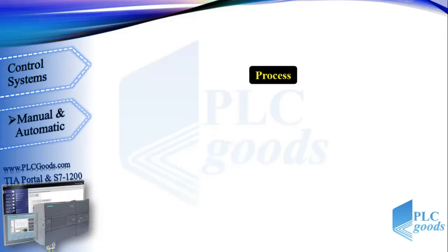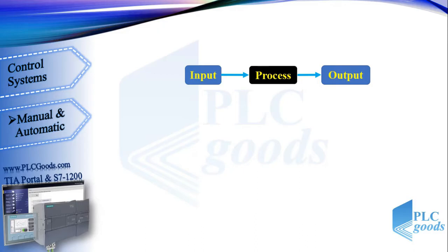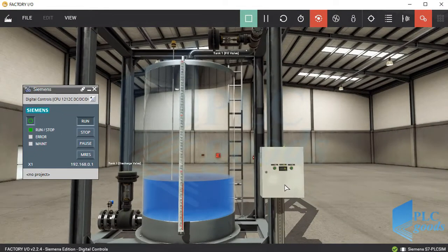Each industrial process has some inputs and outputs. Simple control methods are independent of output states. If you remember, we have done a project with timers for this tank — we may open its draining valve for 10 minutes, although it may drain within 5 minutes.